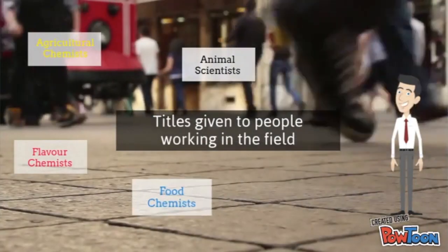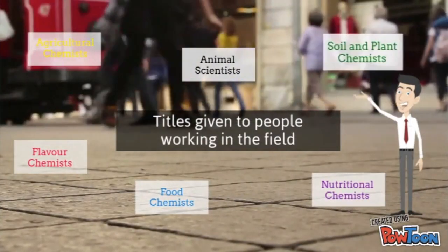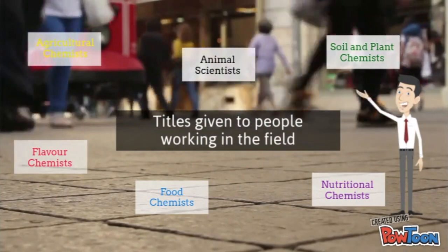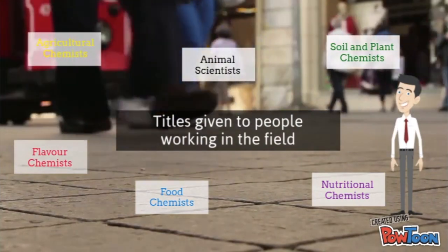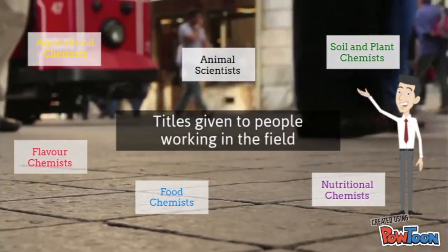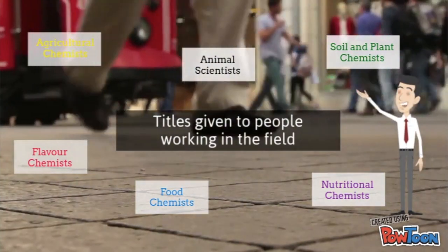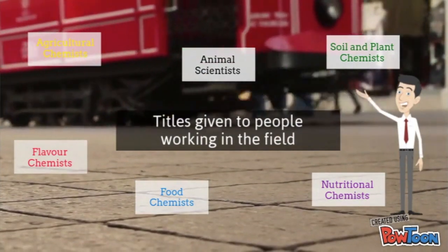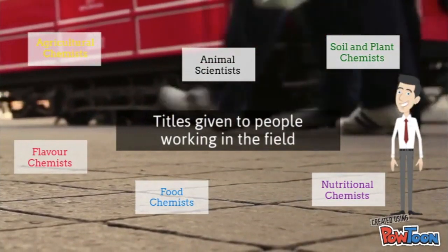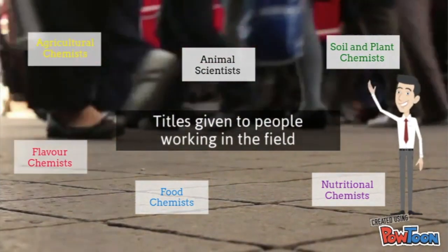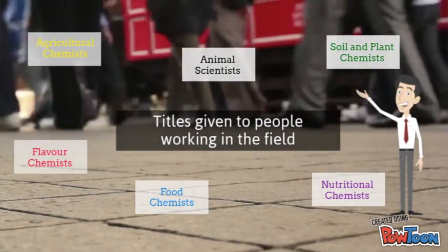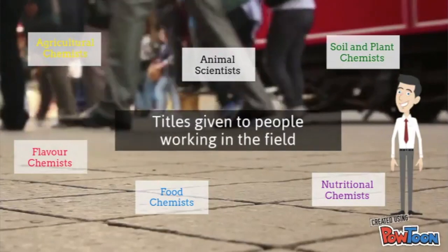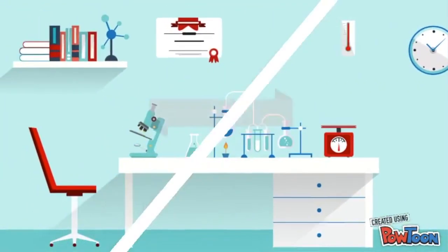So some of the titles given to the people working in the field include agricultural chemists, animal chemists, soil and plant chemists, flavor chemists, food chemists, and nutritional chemists.